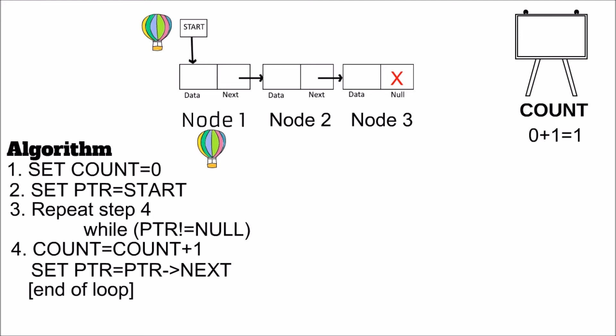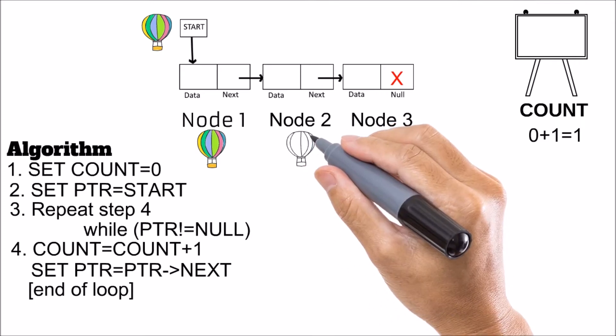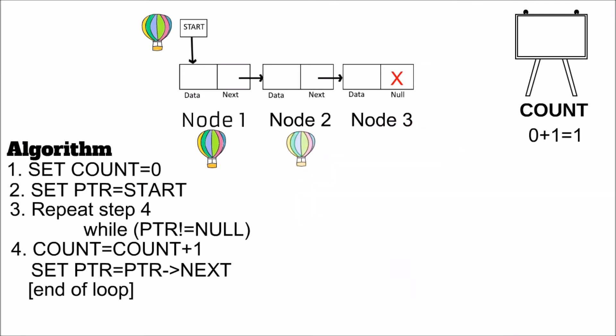First we have set count equal to 0, so 0 plus 1 equals 1. Our display board count will hold 1. Then we go to the next part and access the next node.